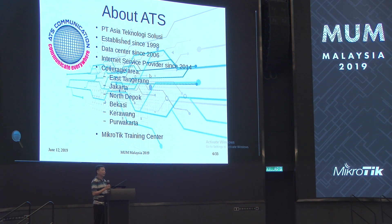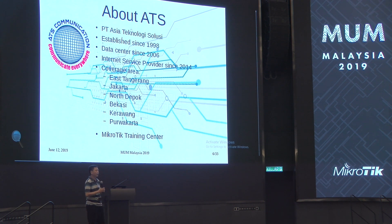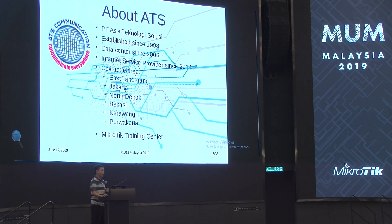ATS is short for Asia Technology Solutions, established since 1998, data center since 2006, internet service provider. The coverage area is Tangerang, Jakarta, North Depok, Bekasi, Kerawang, Purwakarta, and lastly a MikroTik Training Center.